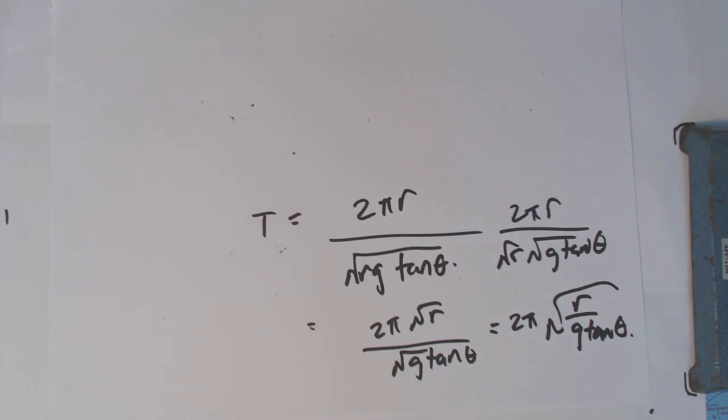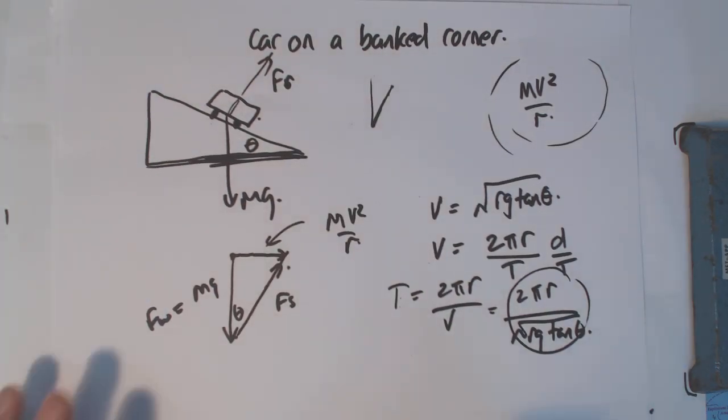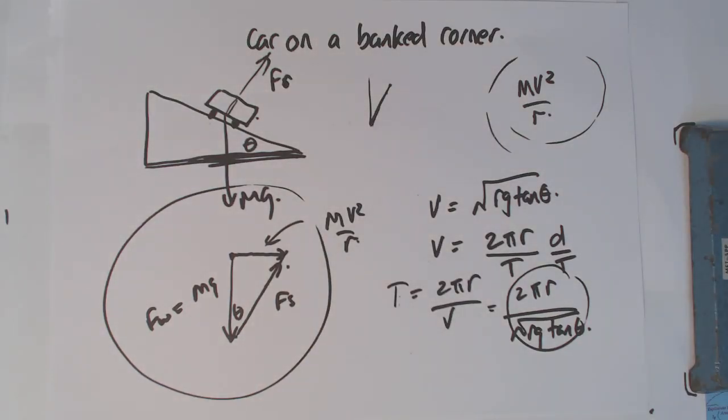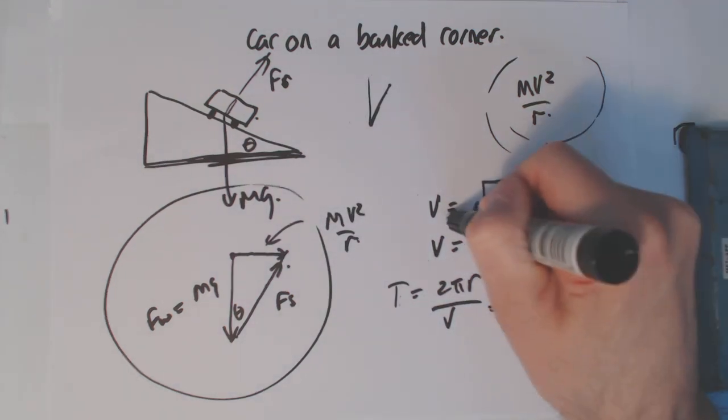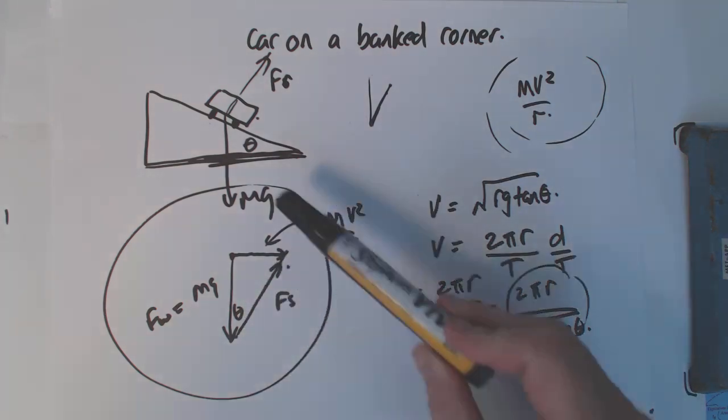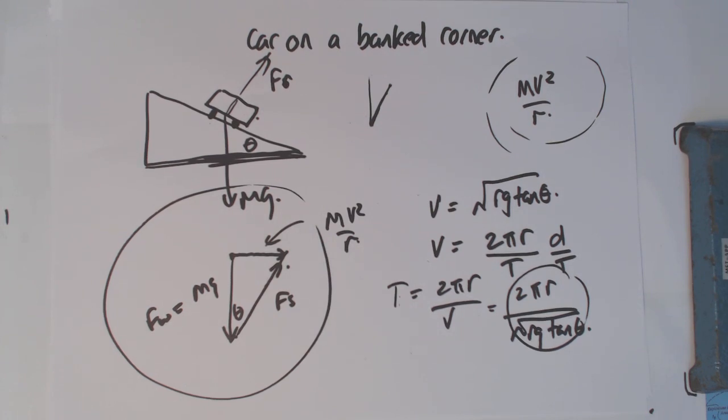like to draw people's attention to with these banked corner situations is that this diagram here is a very special diagram. It's a diagram for when you have exactly the right speed, v = √(rg tan θ). At that exact amount of speed, you don't need any friction – you're not going to drift up the ramp and you're not going to drift down the ramp. You don't need any friction; you could do this on ice.